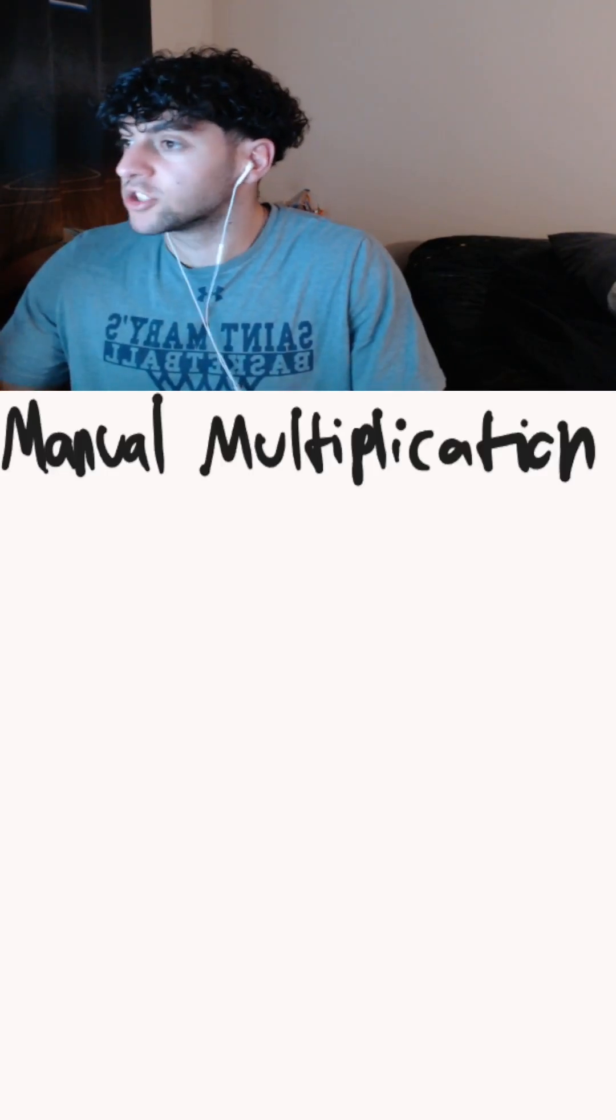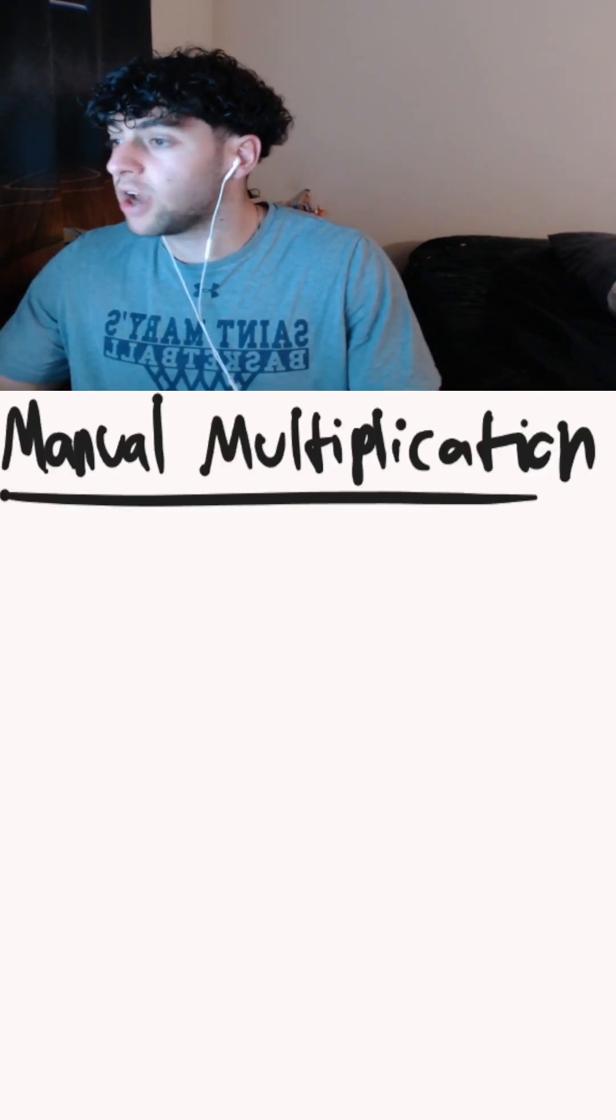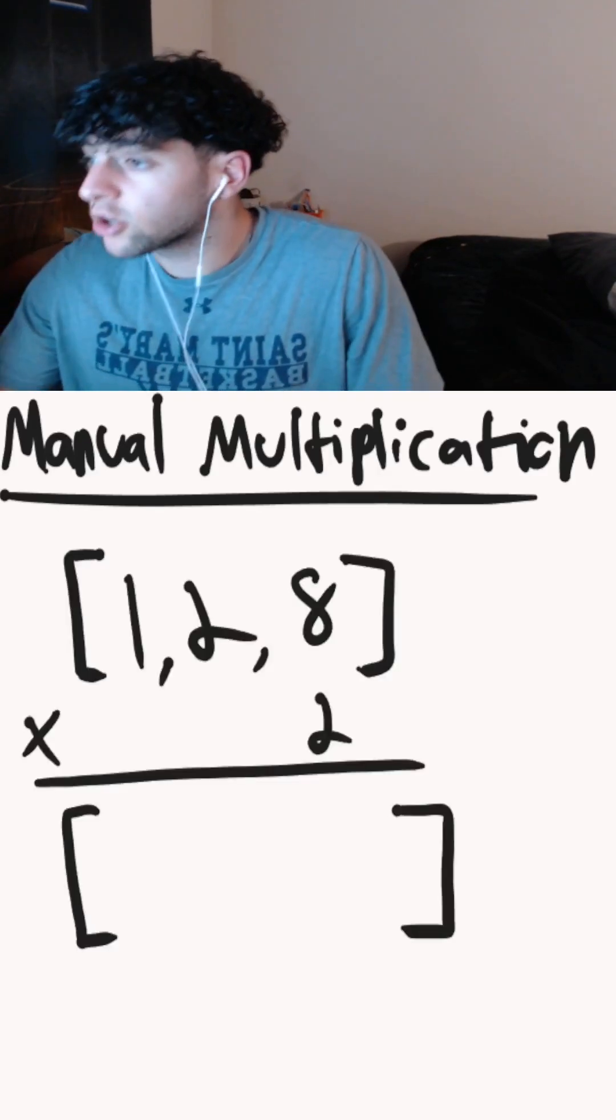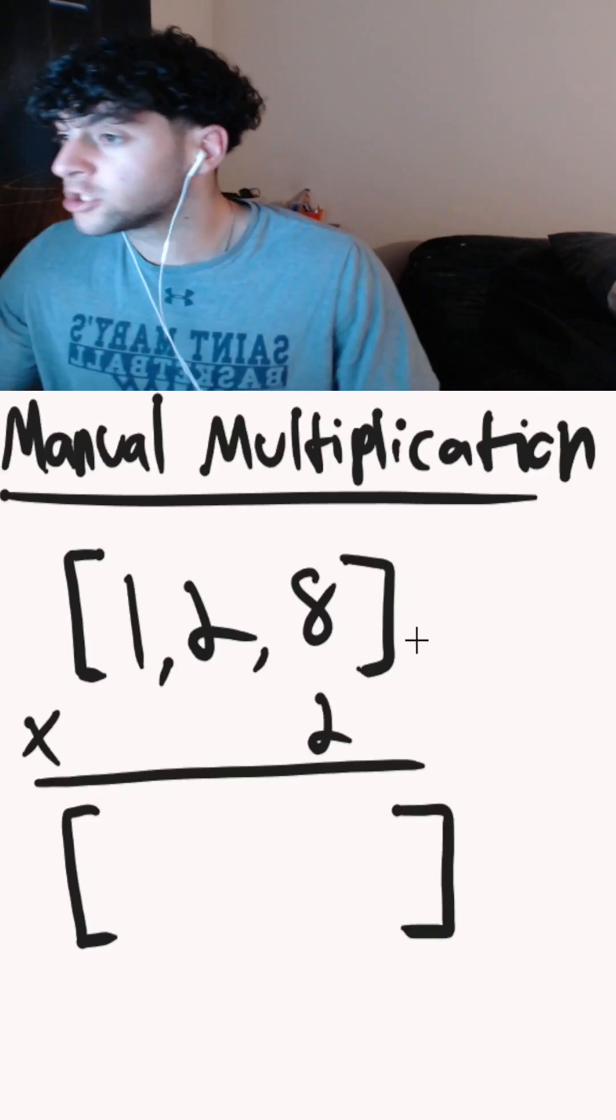Since we don't have a data type that can store 302 digits, we'll perform manual multiplication on an array of digits. Say our current product is 128 stored in an array and we want to multiply it by 2.